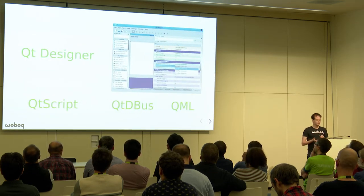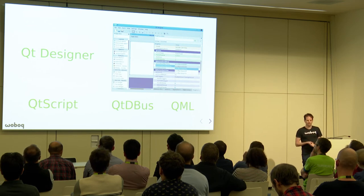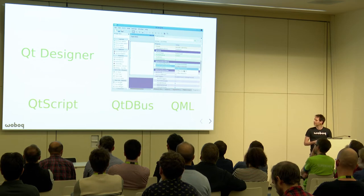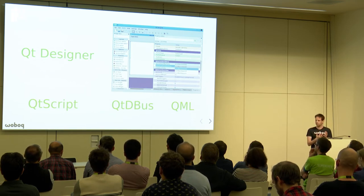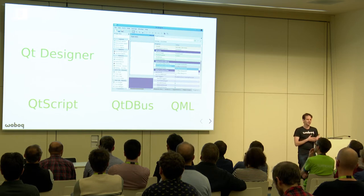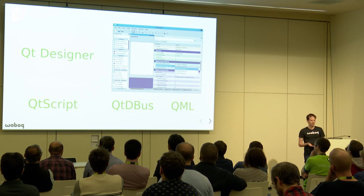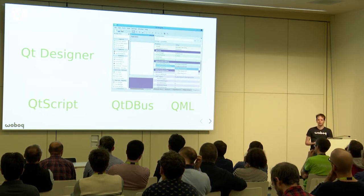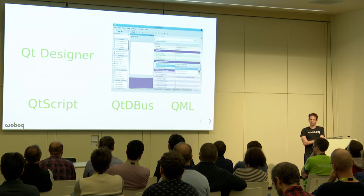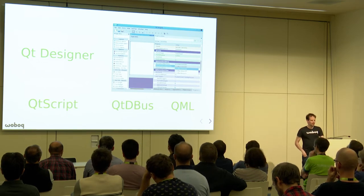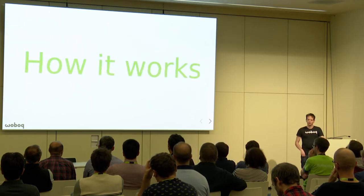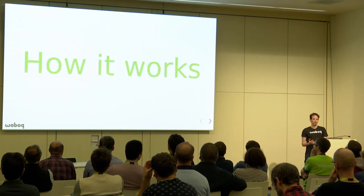The property system was made for QDesigner, so you can have a property editor which shows all Q properties and enums. Properties can also be used by tools like QScript, QDBus, and QML, which makes a lot of use of properties, slots, invocables, and signals. All of that is powered by MOC.